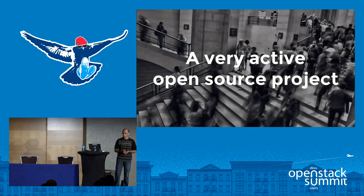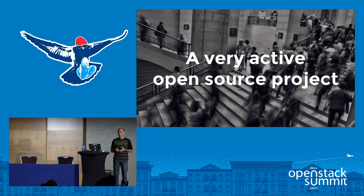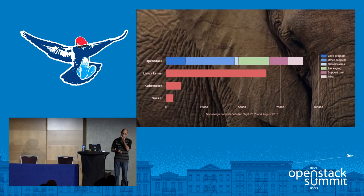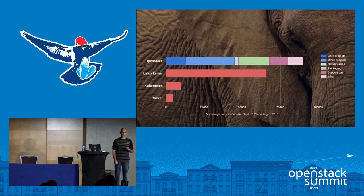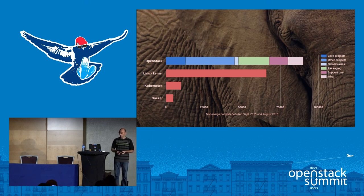So OpenStack is also a very active open source project. Sometimes easy to forget, because all the headlines are about containers, Docker, Kubernetes, and other things. But if you actually compare the number of commits over the last year — well, the Linux kernel is the biggest open source project currently under a single governance. But if you add up all the project work, all the packaging repositories that are official OpenStack projects, plus all the supporting infrastructure, OpenStack activity is actually beyond the Linux kernel activity. Even if you just take the core and service projects — the key code we are producing — it's way bigger than Kubernetes or Docker currently in terms of number of commits over the last year. So it's easy to get lost in the headlines and forget that OpenStack is actually a massive open source project.